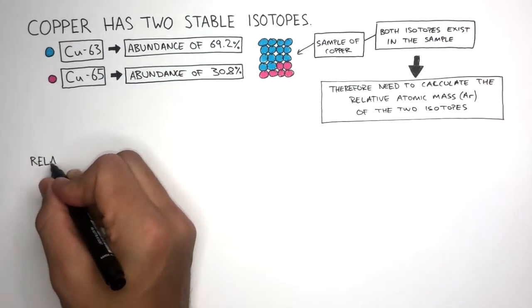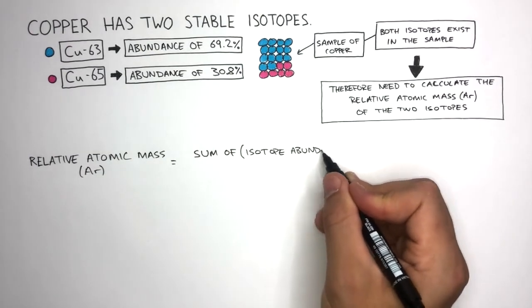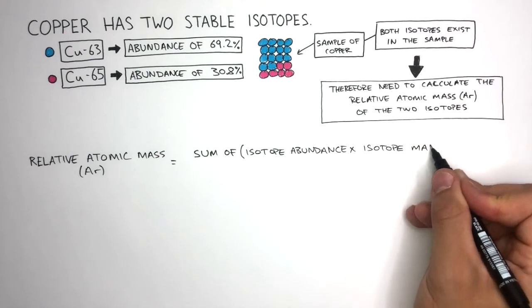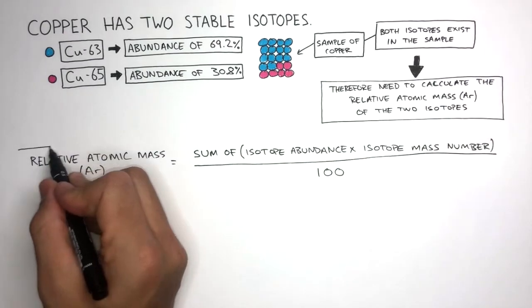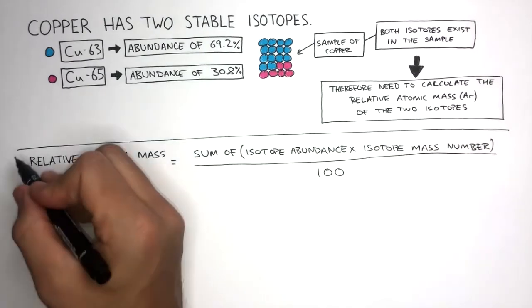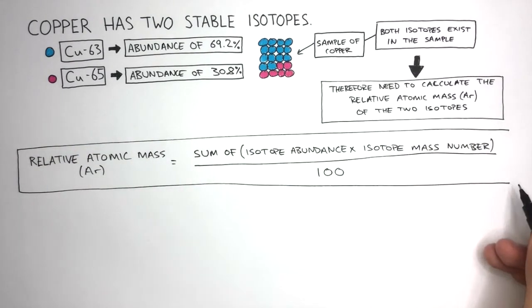The equation to calculate the relative atomic mass is the sum of isotope abundance multiplied by the isotope mass number. We then divide this by 100. If you learn this equation, calculating the relative atomic mass of any isotopes will be very easy.